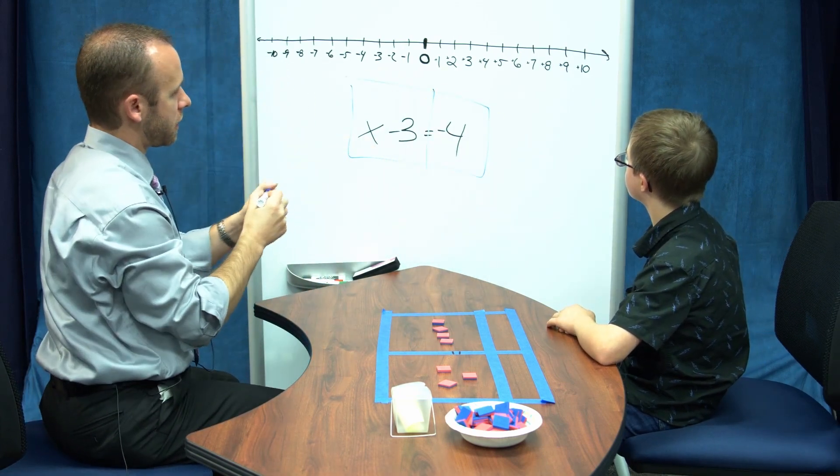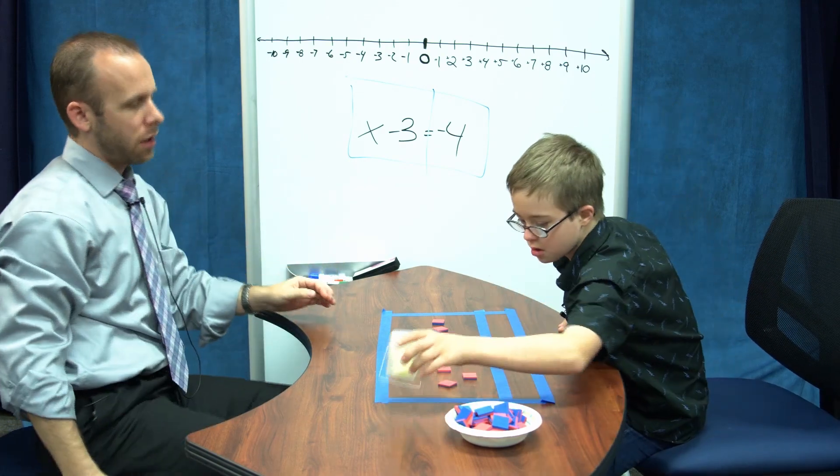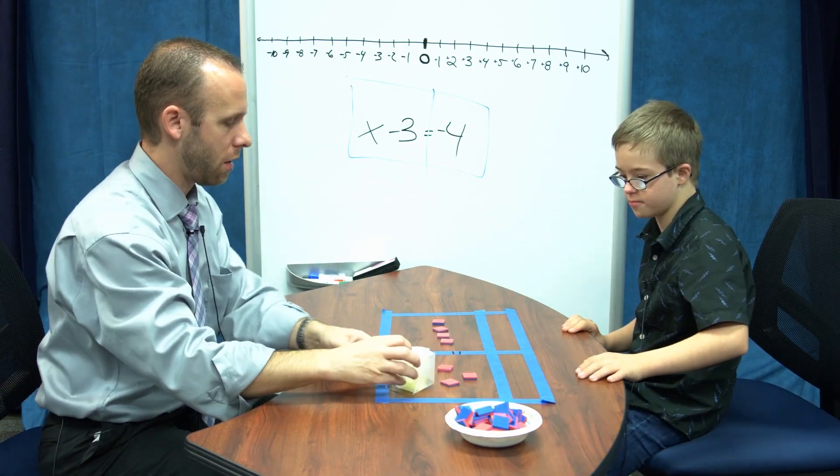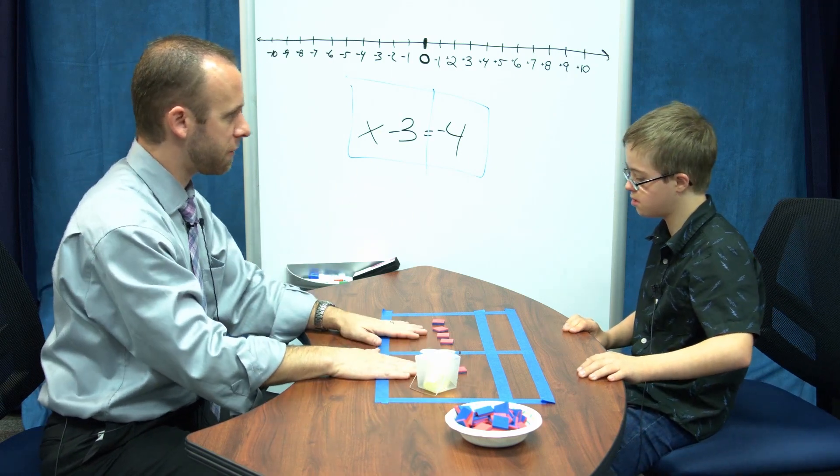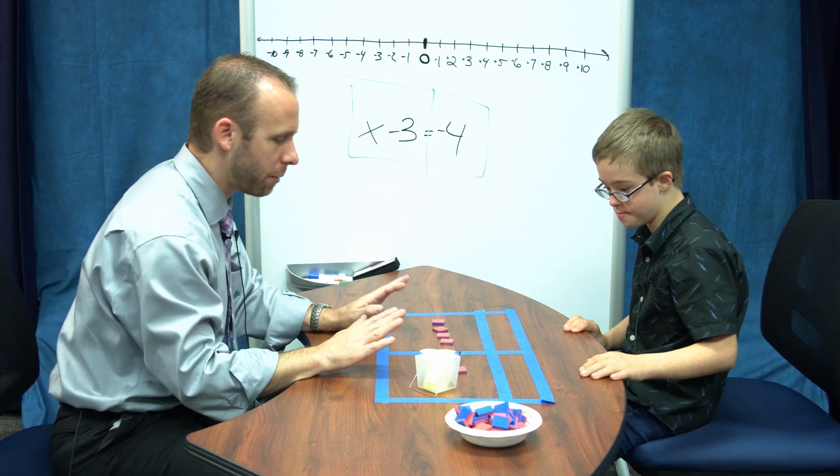What goes in this side? What is that? X. So we have x and negative 3 and that's equal to negative 4. Alright, we're all set up.